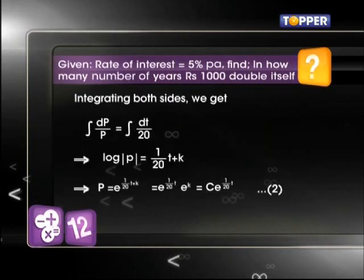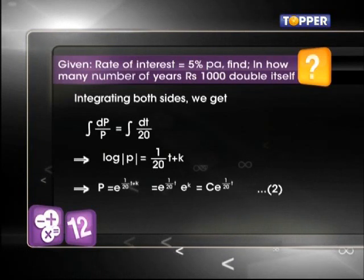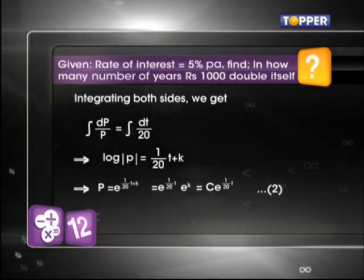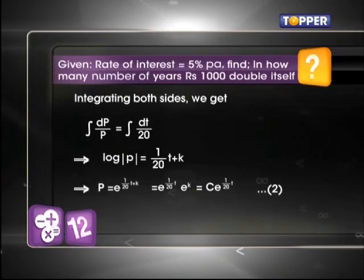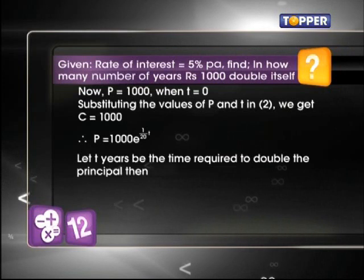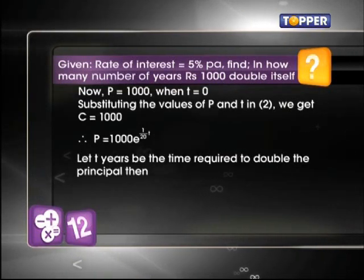On integrating we find p = c·e^(t/20) where c is the constant of integration. Now if principal p is 1000 rupees at t = 0 and it will be 2000 after t years,